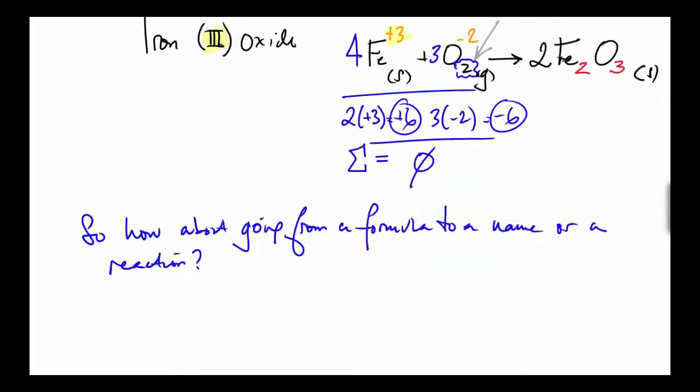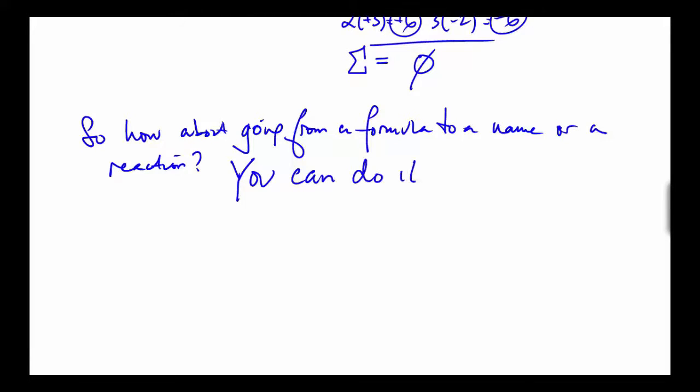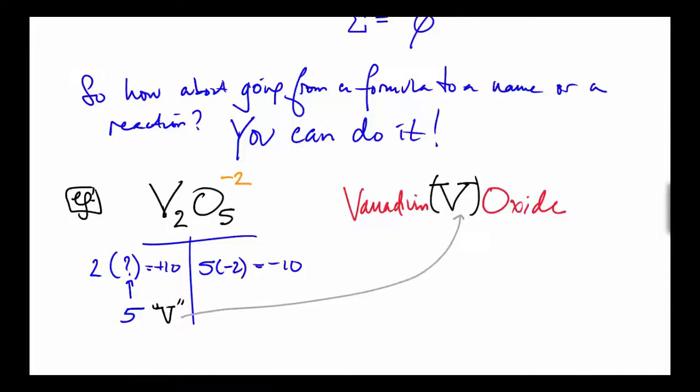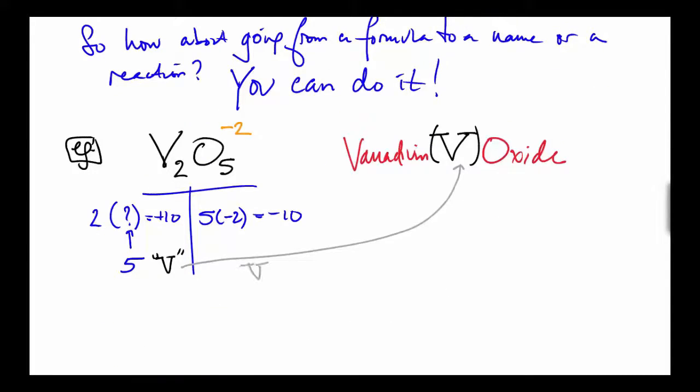How about going from a formula to a name? You can do it. For example, let's look at V2O5. It's vanadium oxide. Which vanadium ion is it? Oxygen has a minus two charge, five of them for a total of negative 10, and two vanadiums will give you the plus 10 charge you need. Must be five. This is vanadium(V) oxide—just put that Roman numeral V there for the five.